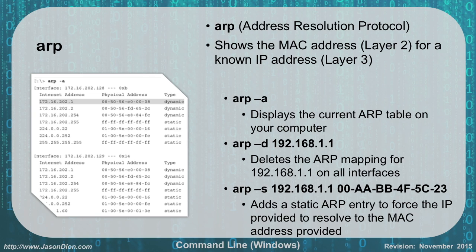In the ARP table, you can see all the different IPs the machine has learned and the MAC addresses associated with them. Notice how 172.16.202.255, which is a broadcast address, is all F's — that's the broadcast MAC address. Similarly, 255.255.255.255 is all broadcast as well. The other entries are different machines the computer has seen, the 224 addresses are in the multicast range, and notice how the .1 entries on both interfaces share the same MAC address because they reference the same machine.